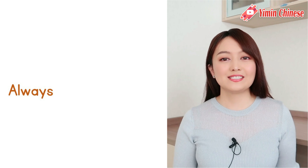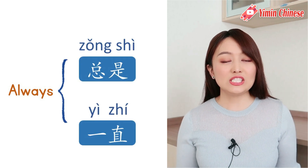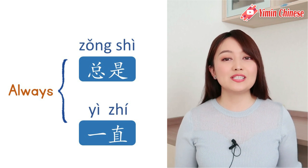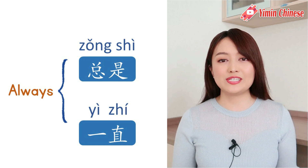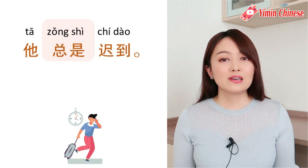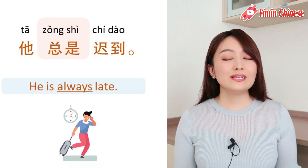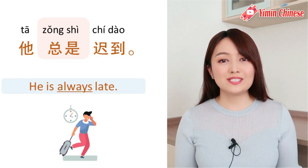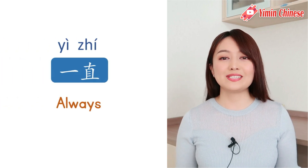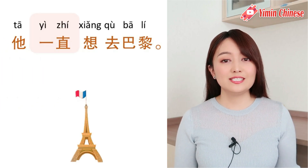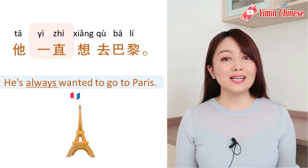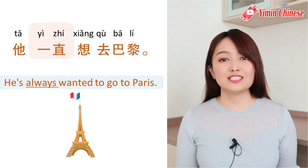好,下一个 is always. In Chinese, there are two ways to say it. You can use 一直 or 总是. In the next video, I'm going to explain the difference between these two words in detail. Today, just know there are two words you can use to say always. First, 总是. 比如说,她总是迟到。She's always late. 她一直想去巴黎。She always wanted to go to Paris.